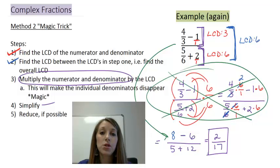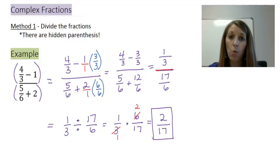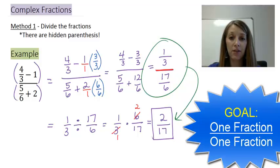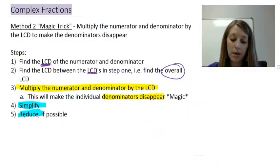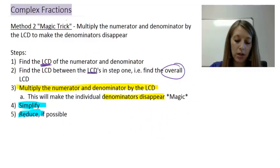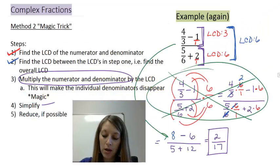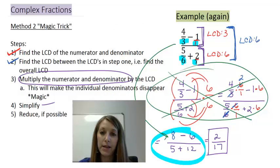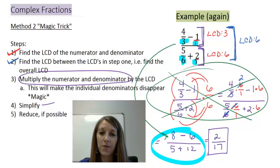To review complex fractions: we have two methods. Method 1 is where we get one fraction over one fraction, then flip and multiply following basic fraction rules. Method 2 is the magic trick — all the individual denominators disappear and we're left with just one basic fraction. That summarizes complex fractions, and that's where this video ends.